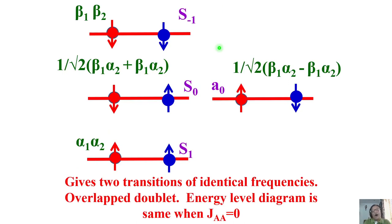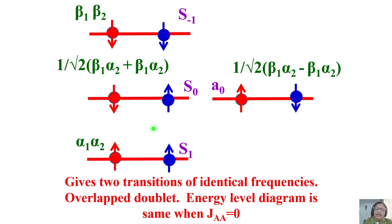Let us see how many transitions we get in A2. Remember, you worked out the energy level diagram for AX. For AB, the wave functions are not pure product states — in a strongly coupled system, the mixed states must be taken into account. For example, alpha-beta and beta-alpha states get mixed, unlike the weakly coupled case where product functions like alpha-alpha, alpha-beta, beta-alpha, beta-beta are the wave functions. In the strongly coupled case you must account for this mixing.